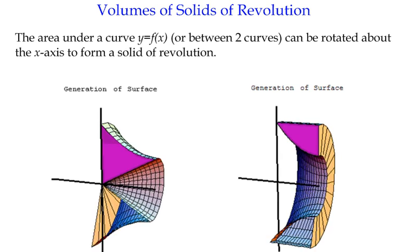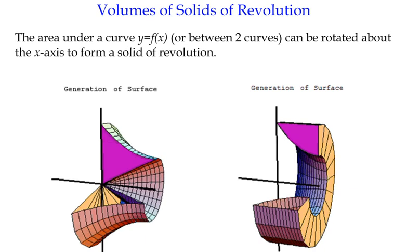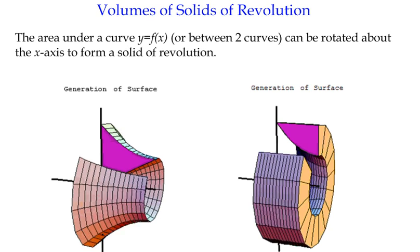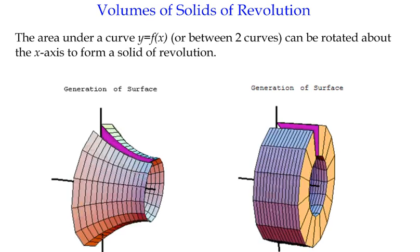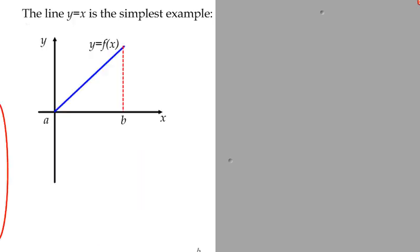And we can work out the volume of those shapes because effectively what we've got at any slice is a circle, and the radius of the circle is simply the value of the y-coordinate of the original shape. So we can have a think about that in terms of the formula for it.